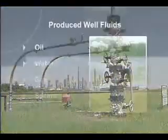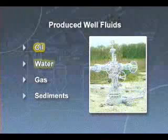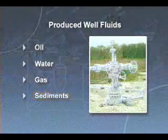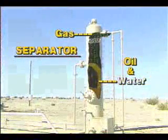Produced well fluids typically consist of varying amounts of oil, water, gas, and sediment. The first step in processing these fluids is to split them up into their individual components. This generally takes place at some type of separator.